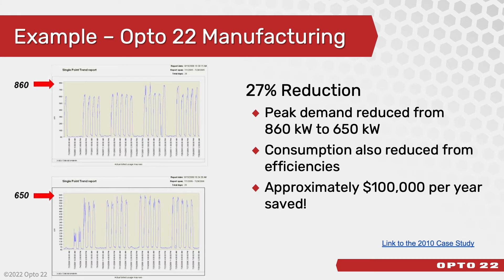Here at the Opto 22 factory, we implemented this strategy and we were able to reduce our peak demand by 27%. Combined with reductions in our consumption, we saved the company approximately $100,000 per year. This case study, along with others, are available on our website — please take a look.